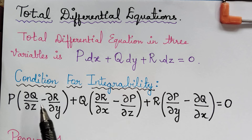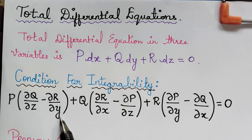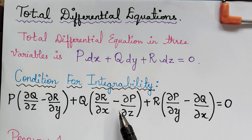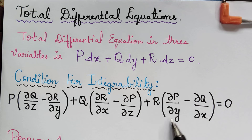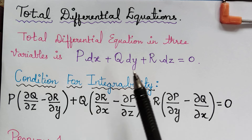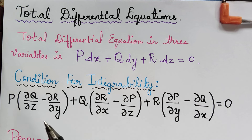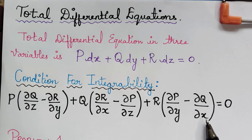The condition for integrability is given by P multiplied with (∂Q/∂z minus ∂R/∂y) plus Q multiplied with (∂R/∂x minus ∂P/∂z) plus R multiplied with (∂P/∂y minus ∂Q/∂x) equals 0. To check whether the given equation satisfies this condition, we first need to partially differentiate P, Q and R with respect to x, y and z, then substitute those values and verify the result equals 0.